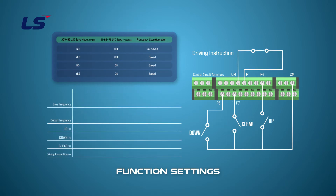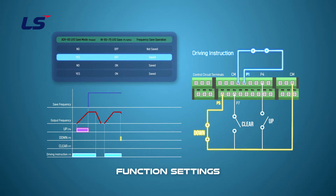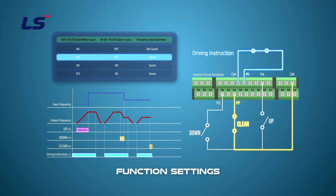The diagram shown on the screen shows when ADV 65 is set to Yes. When the ADV 65 UD save function is set to Yes, the operating frequency during constant speed is saved regardless of the multifunction digital input up-down save input status. To clear the stored frequency, assign one of the multifunction digital inputs to Clear and turn it on.